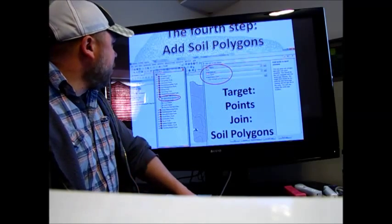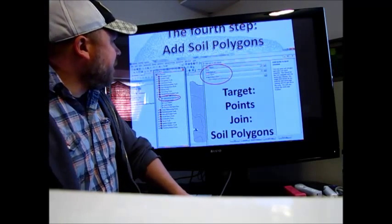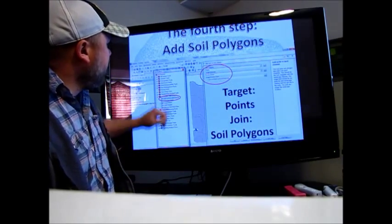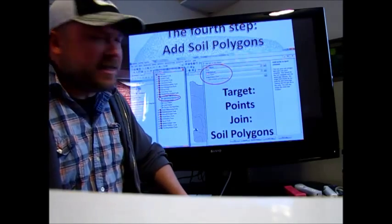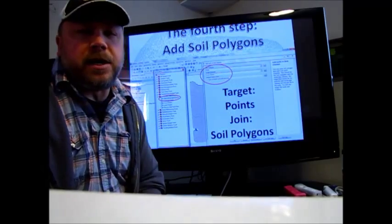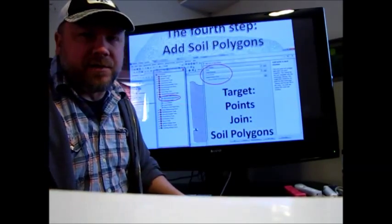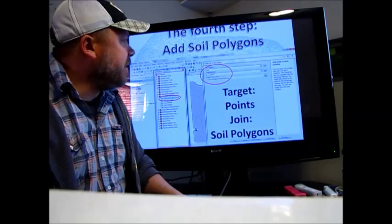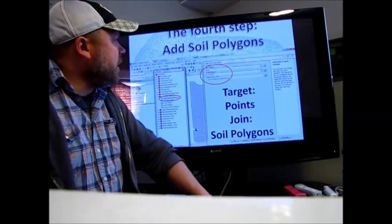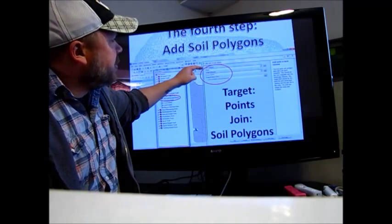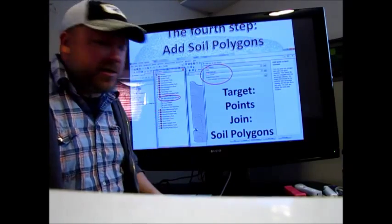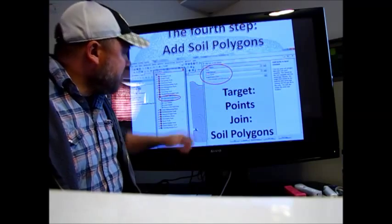Once you've done that, the fourth step then would be to add in your soil polygons. We've got a tool set here called Add Soils to Land Classes. You have to bring in the soils data - I would recommend clipping it to the boundaries of your field. You've got the soils data from the USDA NRCS. Your join feature would be the soils and your target feature would be that point file that we just created, and we're going to join those up.